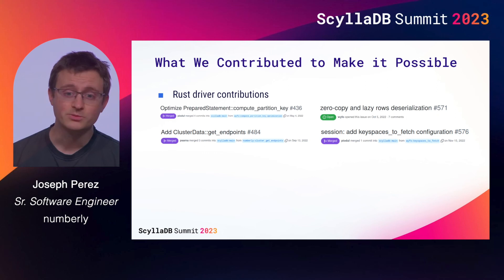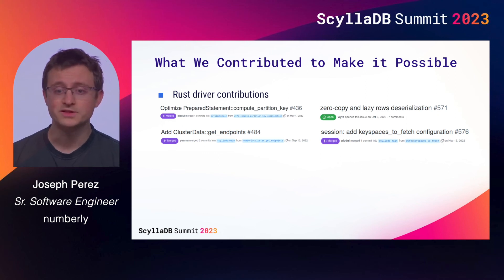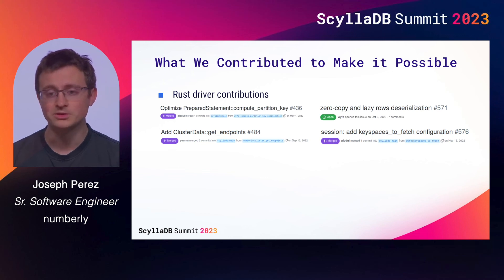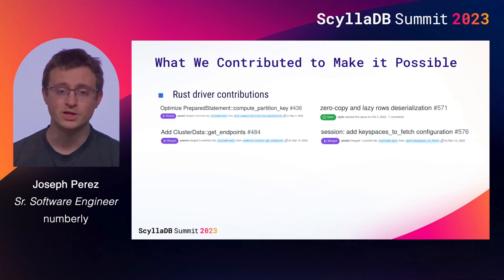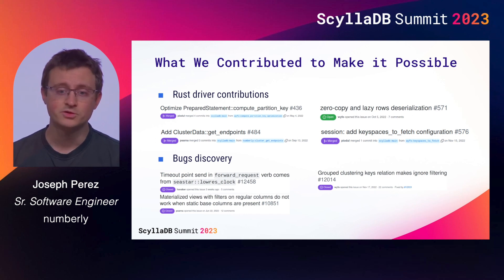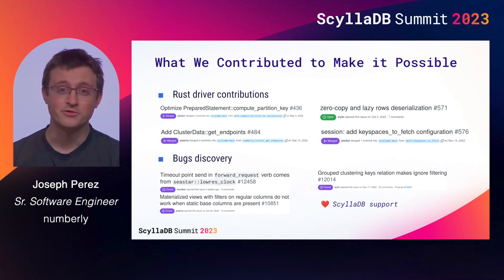To make this project possible, we contributed to the Scylla ecosystem — especially to the Rust driver, with several issues and pull requests. For example, we added code to compute the replica nodes of a primary key, which we needed to compute the shard of a message. We hope this will help others following this session who want to use this sharding pattern. We also discovered some ScyllaDB bugs and worked with ScyllaDB support to have them fixed. Thank you very much to ScyllaDB support for your reactivity and amazing work.